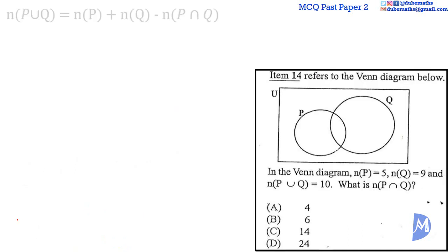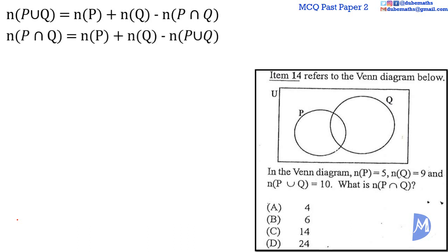Question 14. We know the result that the number of elements in P union Q equals the number of elements in P plus the number of elements in Q minus the number of elements in P intersect Q. Transposing: the number of elements in P intersect Q equals n(P) + n(Q) - n(P union Q), which is 5 plus 9 subtract 10. 5 plus 9 is 14; 14 subtract 10 is 4. The answer is A.